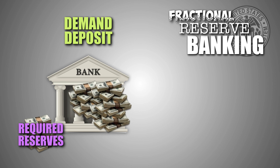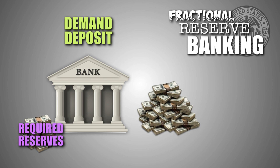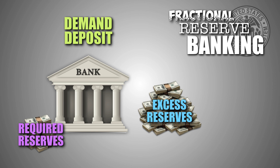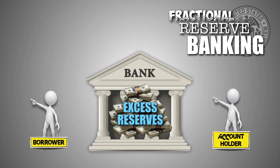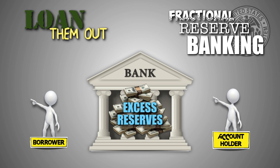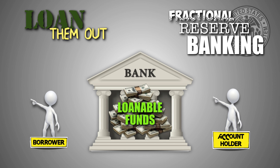After the required reserves are held, the portion of the demand deposit that remains is known as excess reserves. Banks can use excess reserves several ways. Most often, banks make excess reserves available to borrowers in the form of new loans. Once they are made available for lending, excess reserves become known as loanable funds.